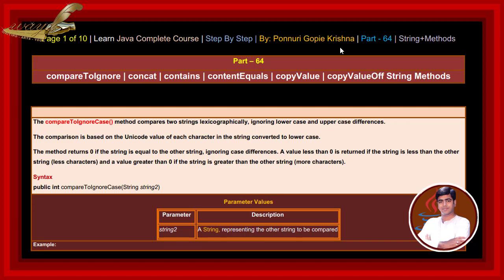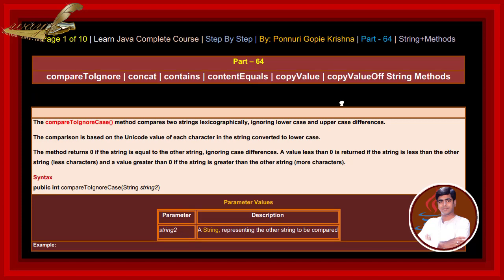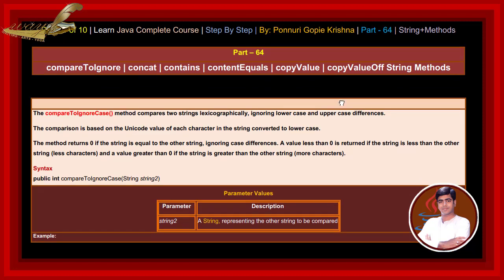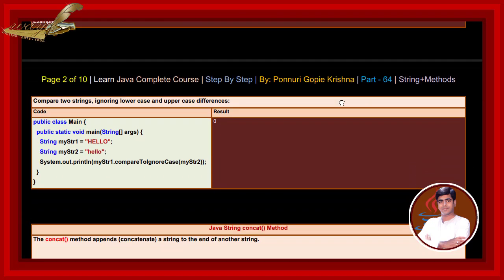See the syntax: public int compareToIgnoreCase(String string2). The parameter string2 is a string representing the other string to be compared. For example, comparing two strings ignoring lowercase and uppercase differences — if we write and execute this code, the output result returns 0.